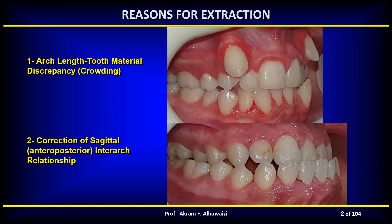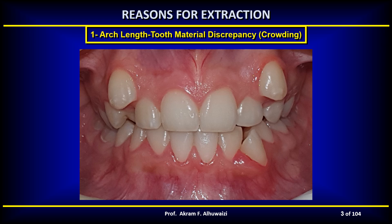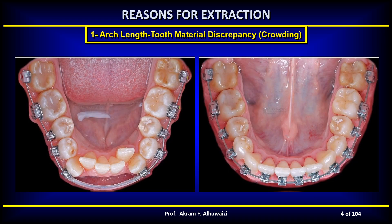The reasons for extraction are two main reasons: crowding and correction of anterior-posterior arch relationships. Concerning the first — arch-length tooth material discrepancy, crowding — ideally the arch-length and tooth material should be in harmony. If the dentition is too large to fit in the dental arch without irregularity, it may be necessary to reduce the dentition size by doing some extractions. Avoiding extractions by excessively increasing the dental arch size and doing expansion would not be tolerated by the oral musculature, and hence it may lead to relapse.